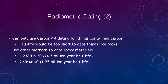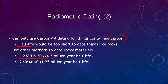Carbon dating only works for objects containing carbon. For rocks, we use other methods. Uranium-to-lead decay has a half-life of 4.5 billion years, and potassium-40 to argon-40 has a half-life of 1.25 billion years — these can be used to determine the ages of rocks.